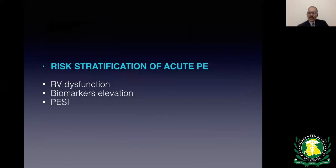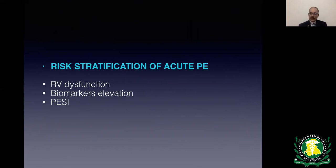Once pulmonary embolism is diagnosed, the next step is risk stratification to determine disposition: ICU, step-down unit, or discharge from the ED on oral anticoagulants. Risk stratification depends on the presence or absence of right ventricular dysfunction, elevation of biomarkers (troponin and BNP), and the pulmonary embolism severity index (PESI).